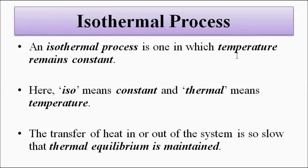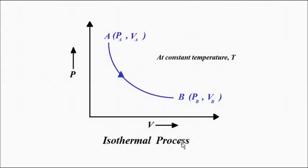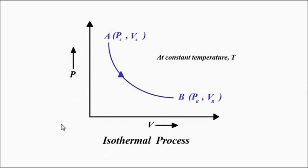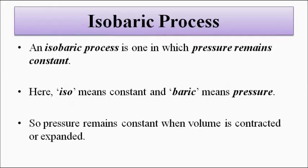The first is the isothermal process — one in which temperature remains constant. The process shown on the P-V diagram at constant temperature T is an isothermal process. 'Iso' means constant and 'thermal' means temperature. Using the gas equation PV = nRT, we can derive the exact expression and draw the graph. This curve shape represents an isothermal process, where heat transfer in and out of the system maintains thermal equilibrium.